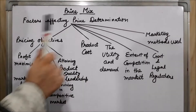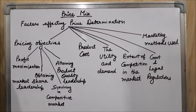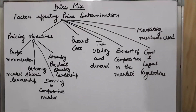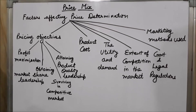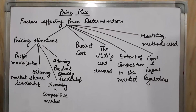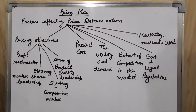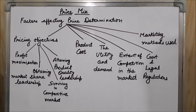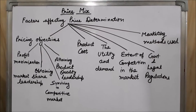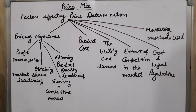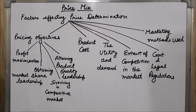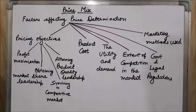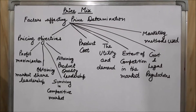If a product has elastic demand — demand that keeps changing with increases or decreases in price — it means a number of substitute products are available. If the firm increases the price, consumers will shift to other substitute products. So when a product has elastic demand, the firm should fix a low price. Whether demand is elastic or inelastic must be considered while fixing the price.